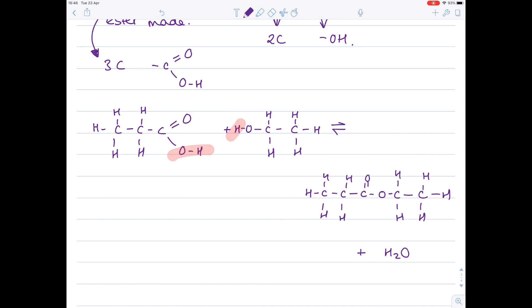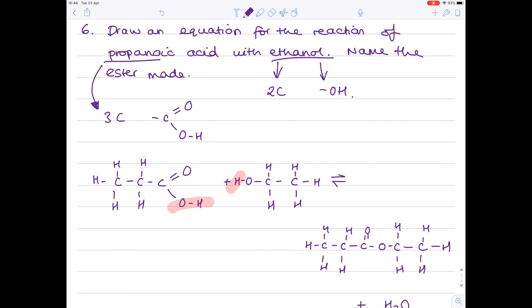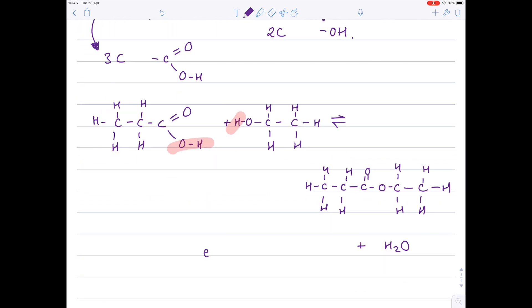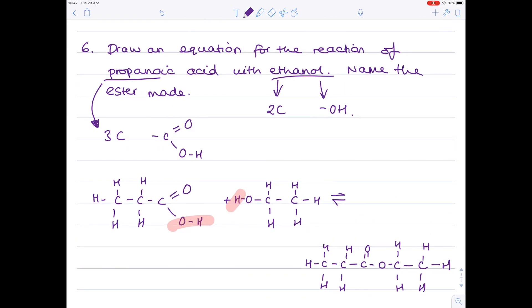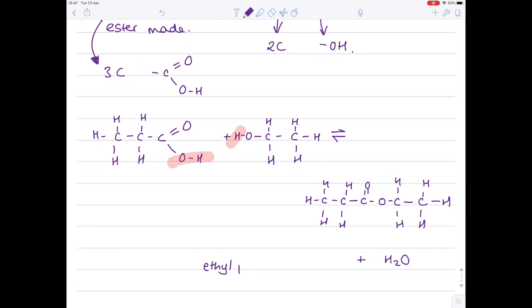Let's name it now. So the alcohol provides the first part of the ester's name. We know that the alcohol was ethanol. So that's why it's ethyl. The carboxylic acid forms the second part of the name. So it's ethyl propanoate. And that is the name of your ester. And this here is the ester in question.